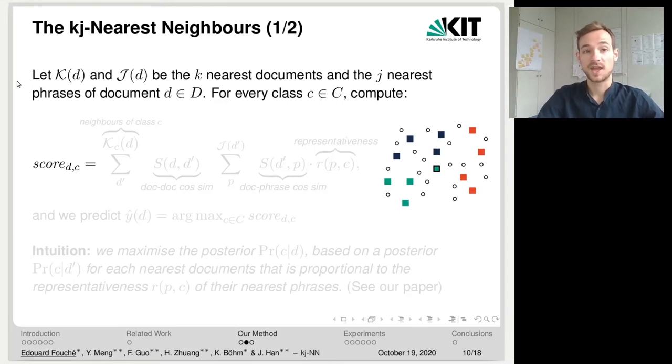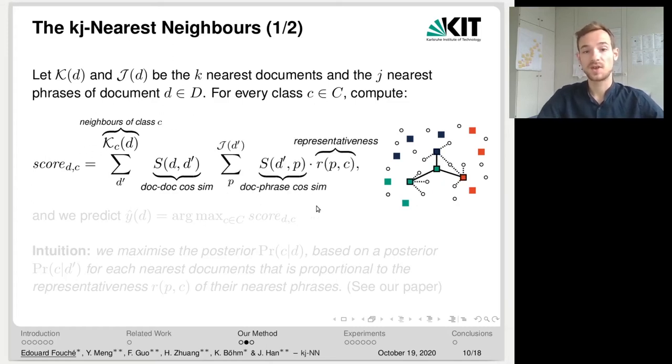Here is the idea of the kj nearest neighbor algorithm. Let k and j be the k nearest documents and the j nearest phrases of a document d. For each class c, we compute the following score. The score is the sum of the cosine similarity from the document d to its nearest neighbor document of class c, times the sum of the cosine similarity of the nearest document d' with the nearest phrases p, times the representativeness of those phrases with respect to class c. And so we predict the class for which the score is maximized.